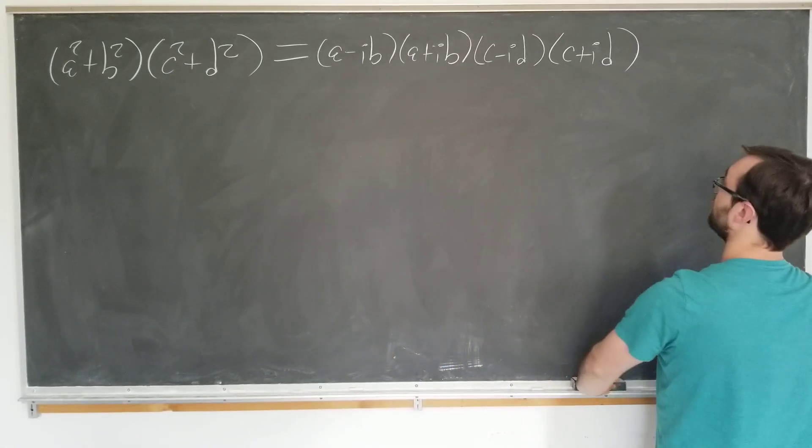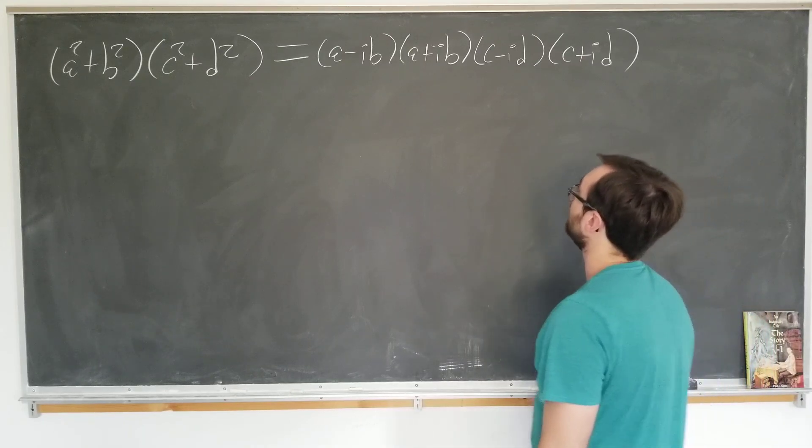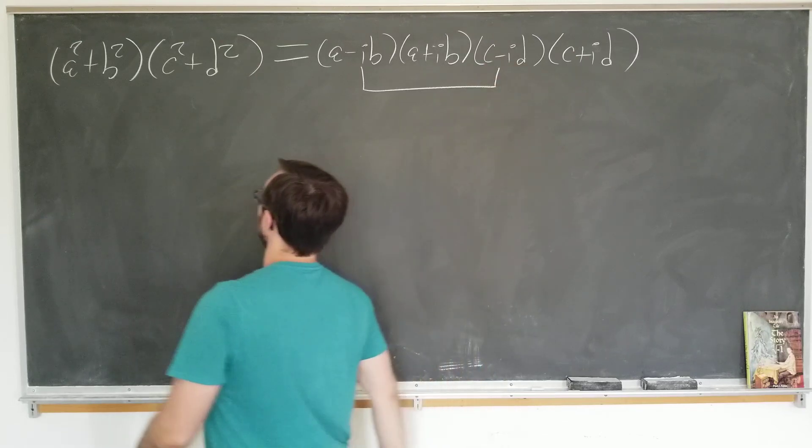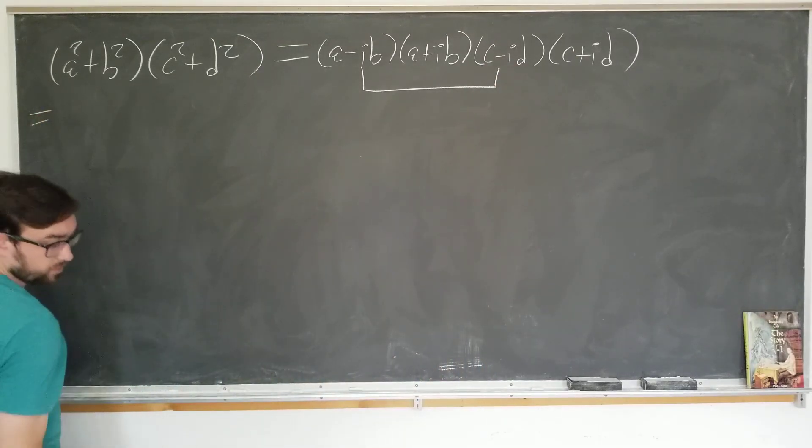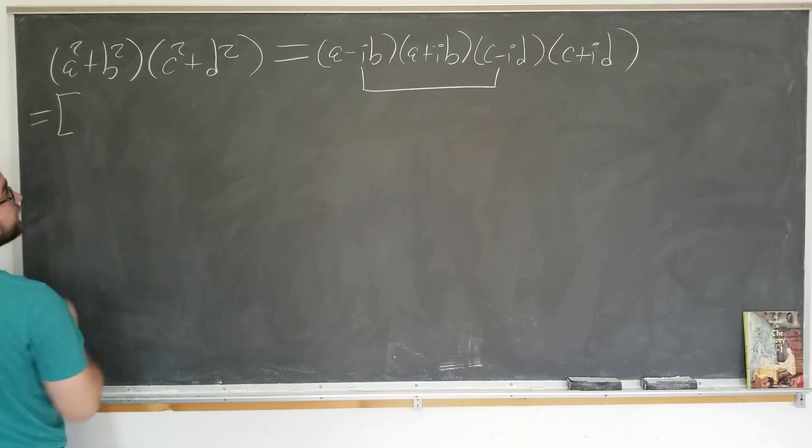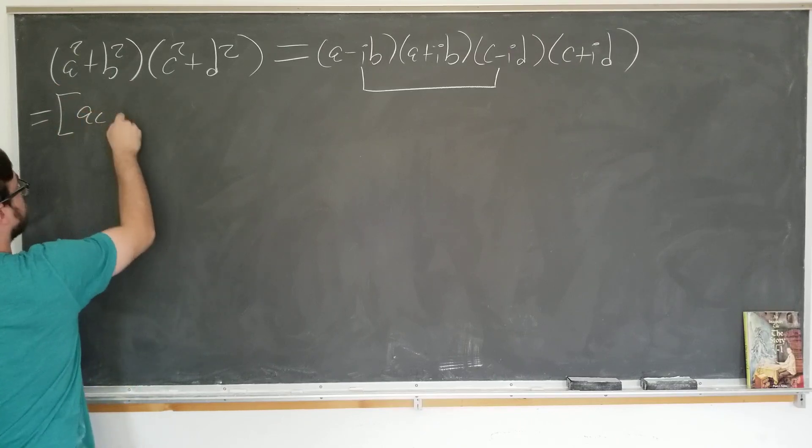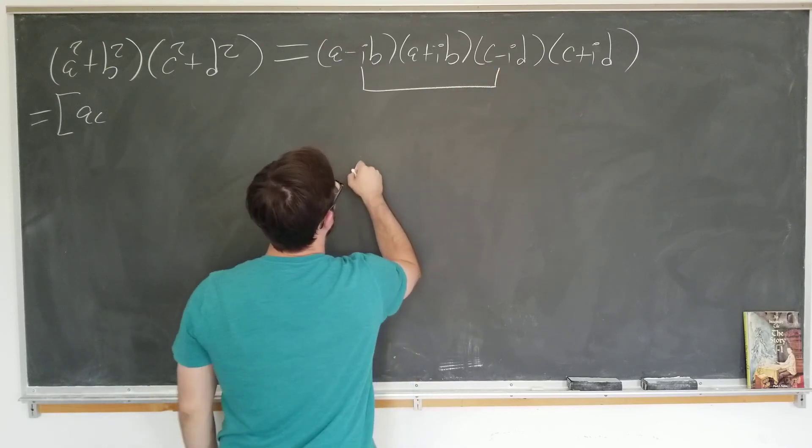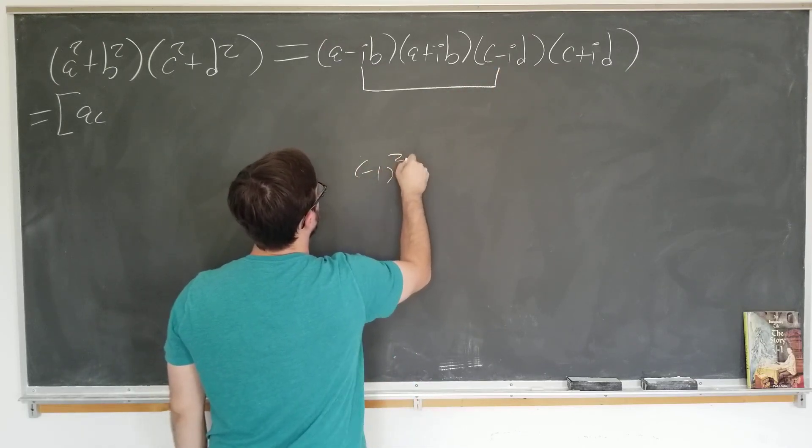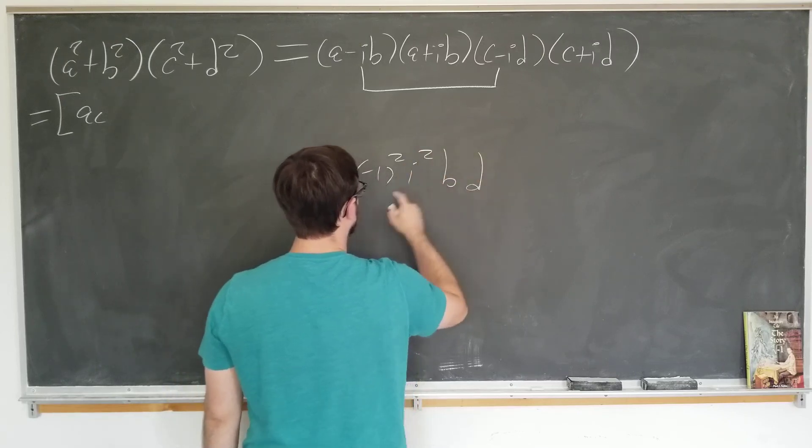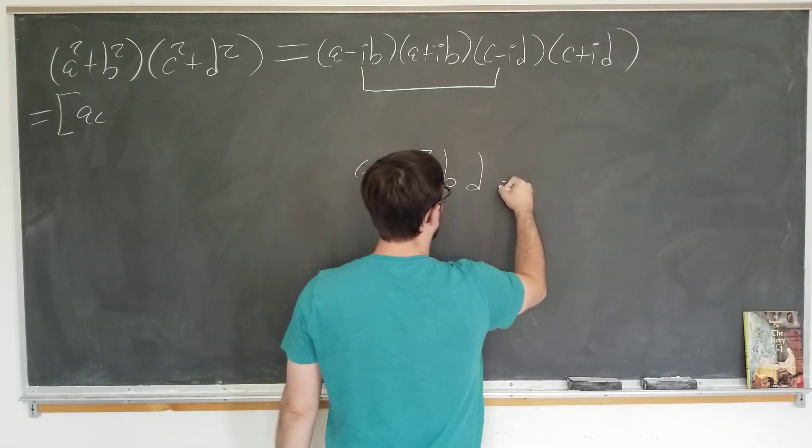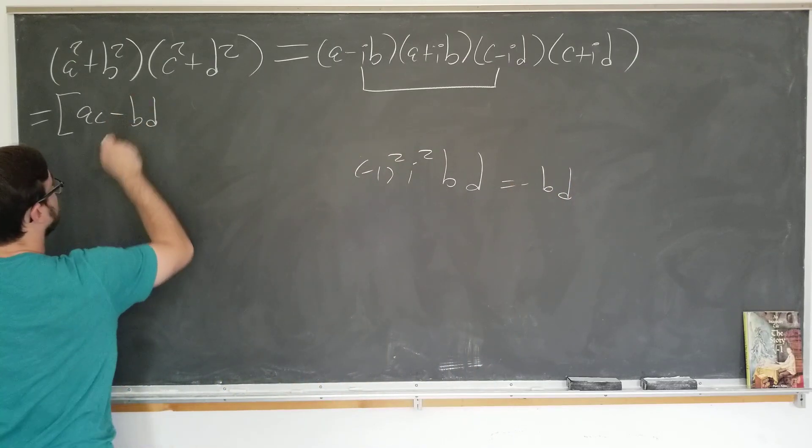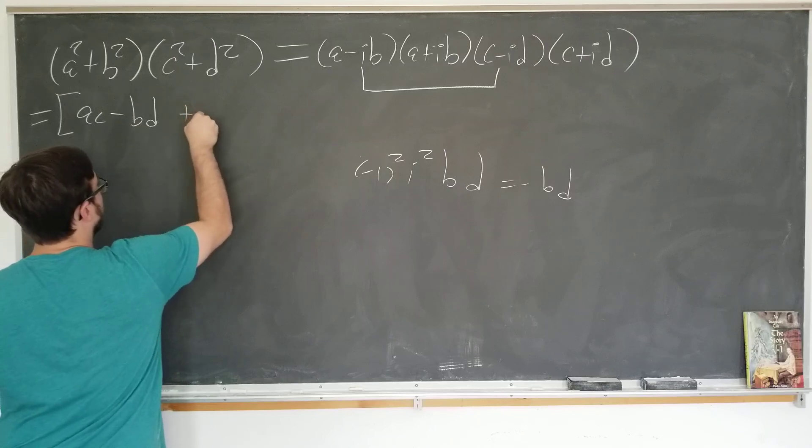So first thing that we're going to do is multiply them in the following way. We're going to group these to get these two together and multiply them. So if we do that, we have ac. The other real term is going to be the last term. So it's minus i squared bd, which is obviously minus bd. Got to keep track of these signs here. ac minus bd.